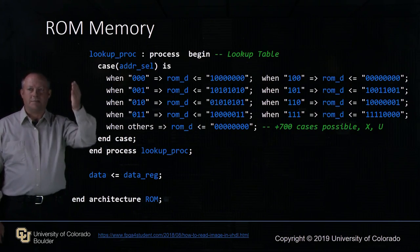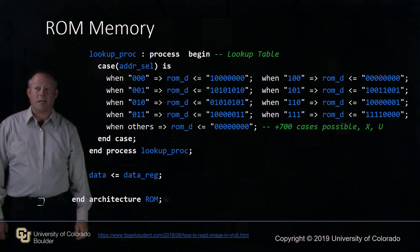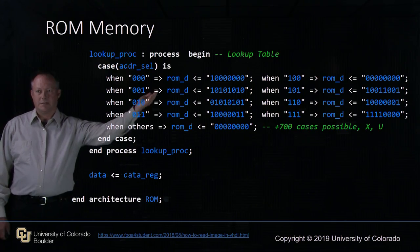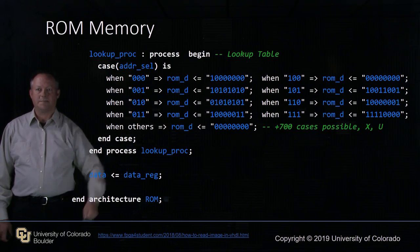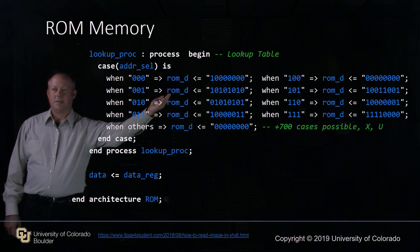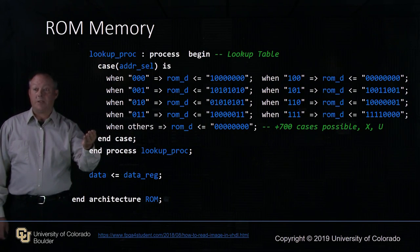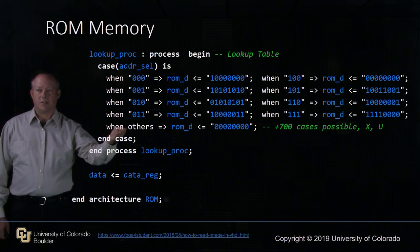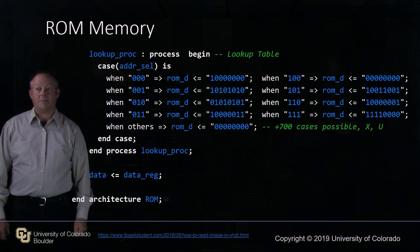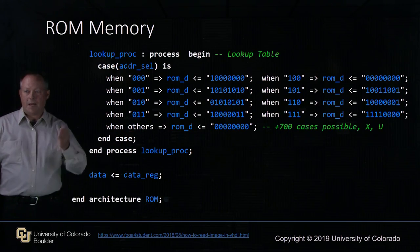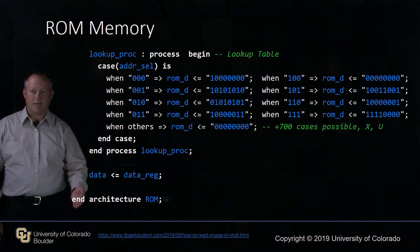Here we have our lookup process. We're going to load some values based on a case statement. When the address is 000, ROM data gets 8-bit value 10000000. When the address is 001, ROM data gets AA, and so on. Note that when creating a case statement for a hand-built table, we need to declare an others statement — in this case, others gives ROM data equals 0. We need others because there are many other possibilities such as X and U. After the process, we set data equals data reg, and end architecture.